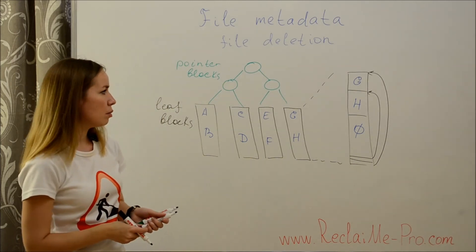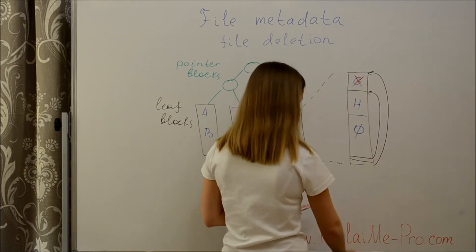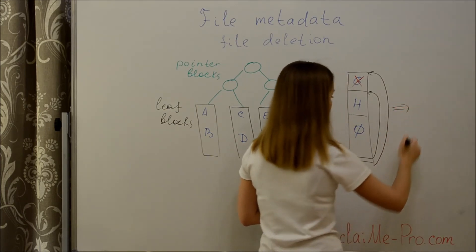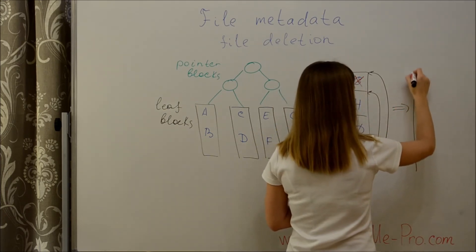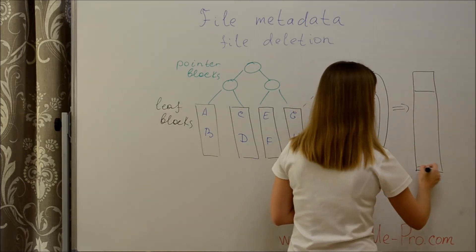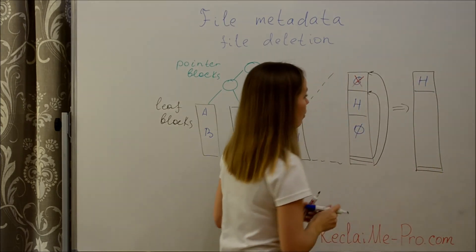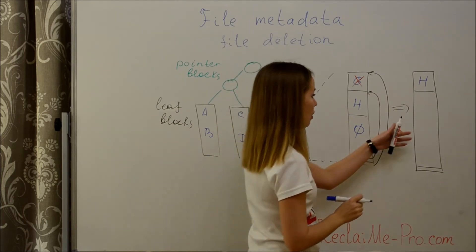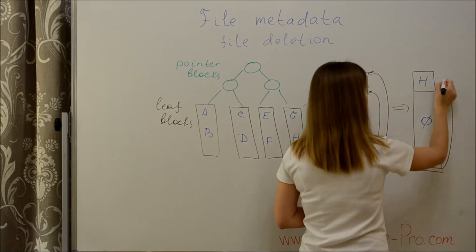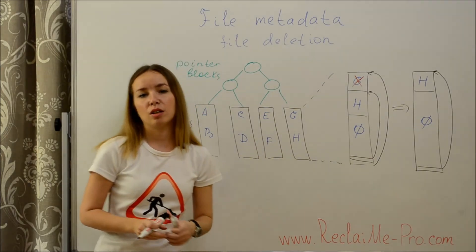This leaf block stores G and H records. Now let's imagine that we need to delete the G record. In this case, a file system reconstructs the entire block, which now holds the H record, and the free space where G was will be zeroed. As you can see, undelete for the G record is impossible.